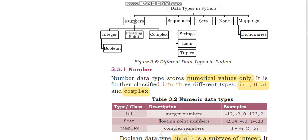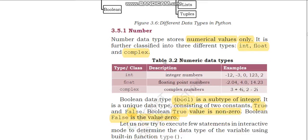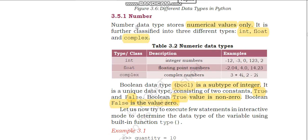First we will do numbers. The number data type stores numerical values only. It is further classified into three types: integer, float, and complex. Integer — you can see both positive and negative numbers can be included in the integer data type. Minus 12, minus 3, 0, 1, 2, 3 — these are examples of integer data types.